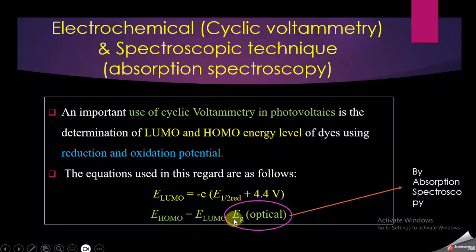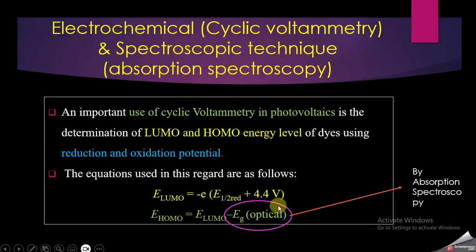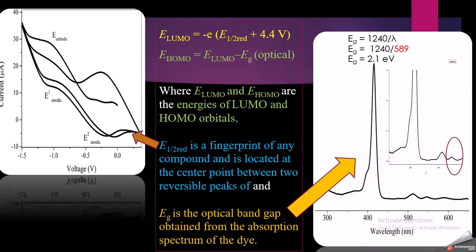This E_gap, which is optical, we will find by absorption spectroscopy. Here is my molecule. I did the cyclic voltammetry of my molecule and the data of current and voltage is plotted here.